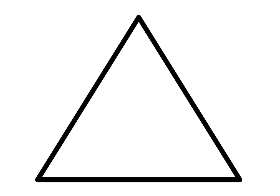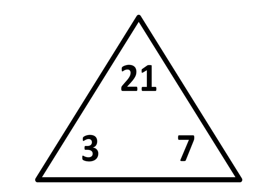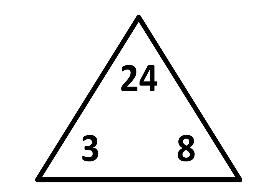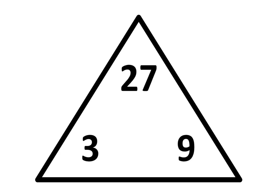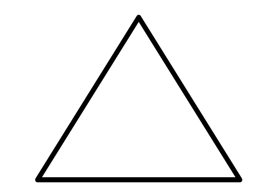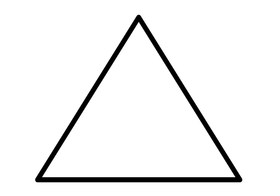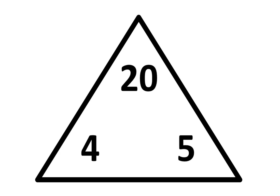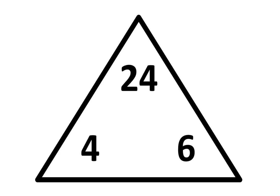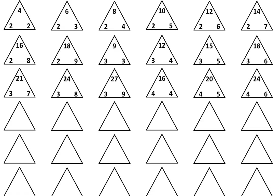Let's move to the third row. In the next triangle, write 3 times 7 is equal to 21. In the next triangle, write 3 times 8 is equal to 24. In the next triangle, write 3 times 9 is equal to 27. In the next triangle, write 4 times 4 is equal to 16. In the next triangle, write 4 times 5 is equal to 20. In the next triangle, write 4 times 6 is equal to 24. And that completes the third row.